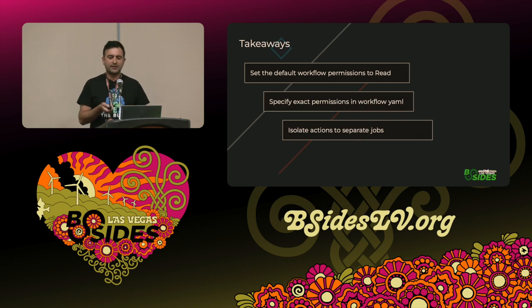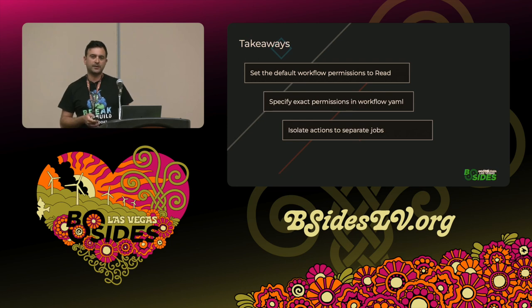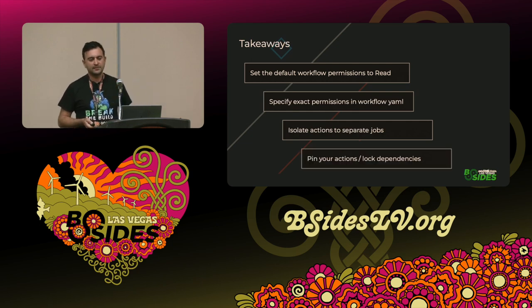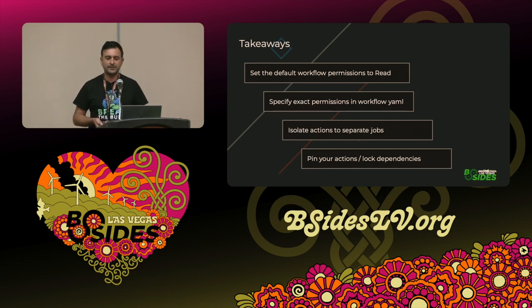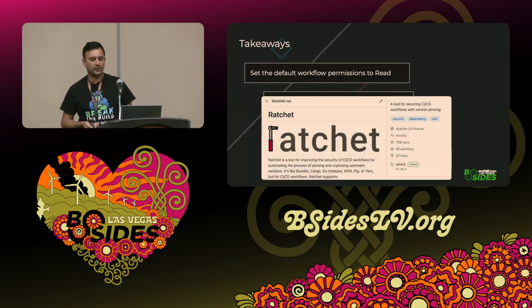Something we haven't covered during this talk: you can isolate actions into different jobs, because each job runs in a containerized environment — if one job gets compromised, it won't affect the other. And lastly, do pin your actions — it's not a perfect mechanism, but it's better than nothing. You can use a cool open-source project called Ratchet to do the pinning automatically on your workflows.